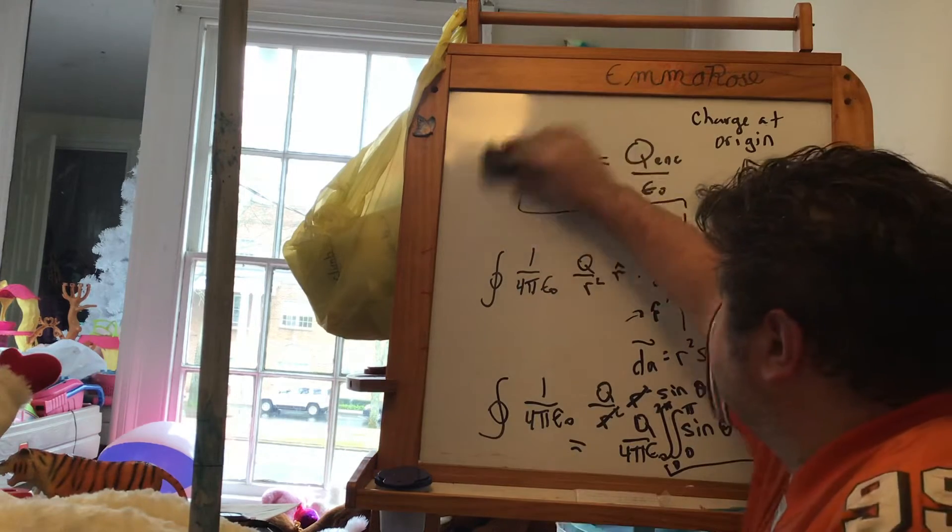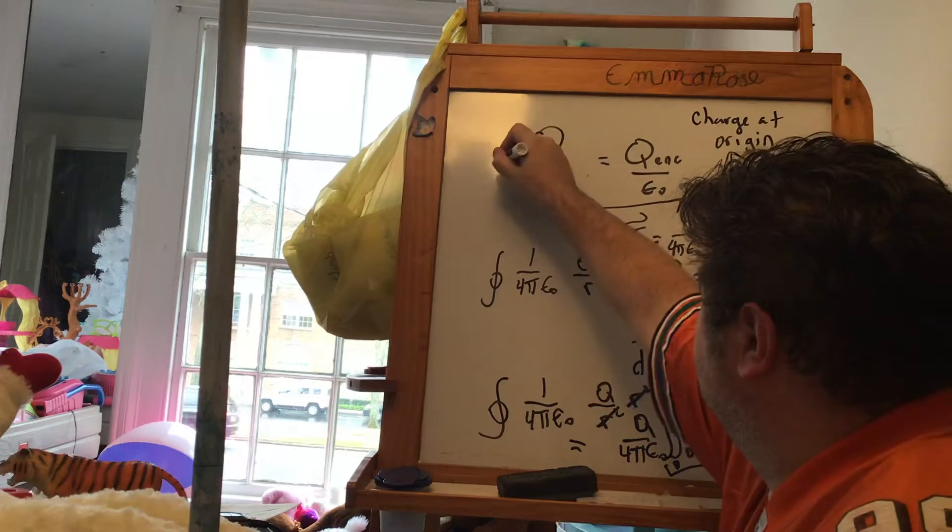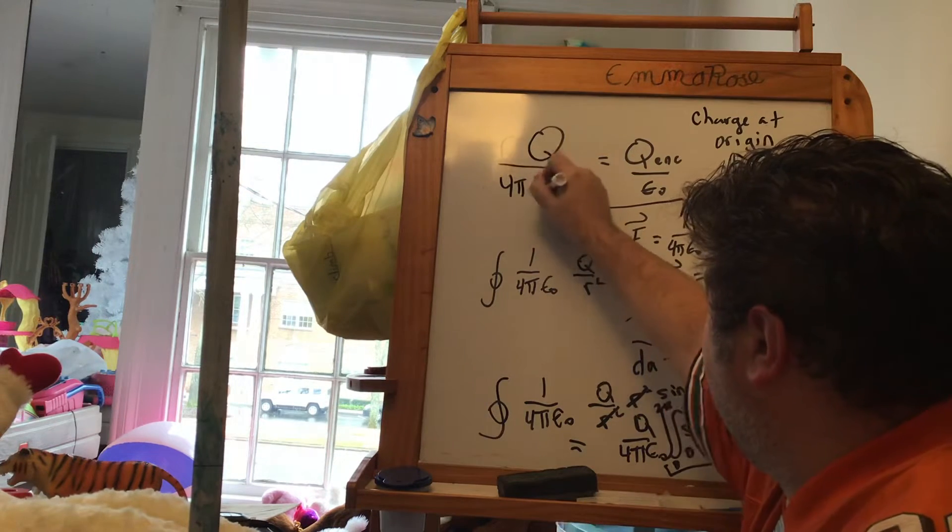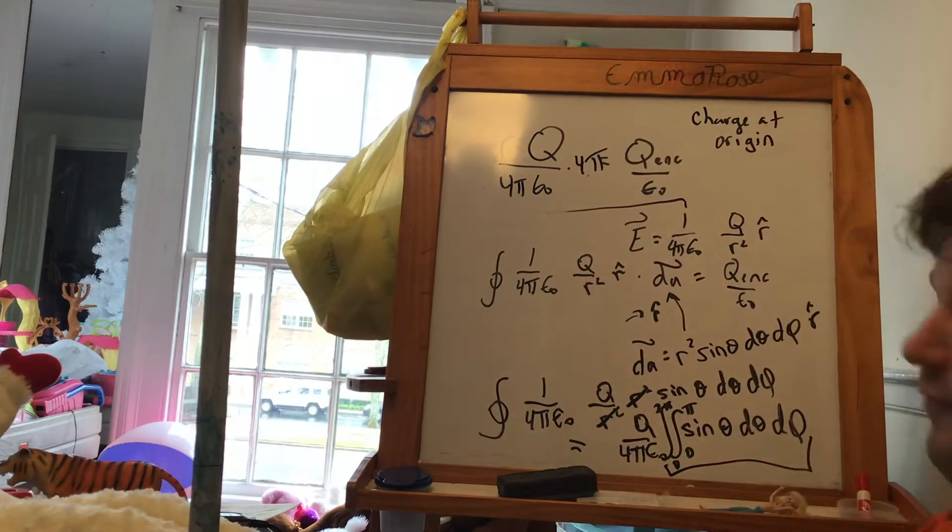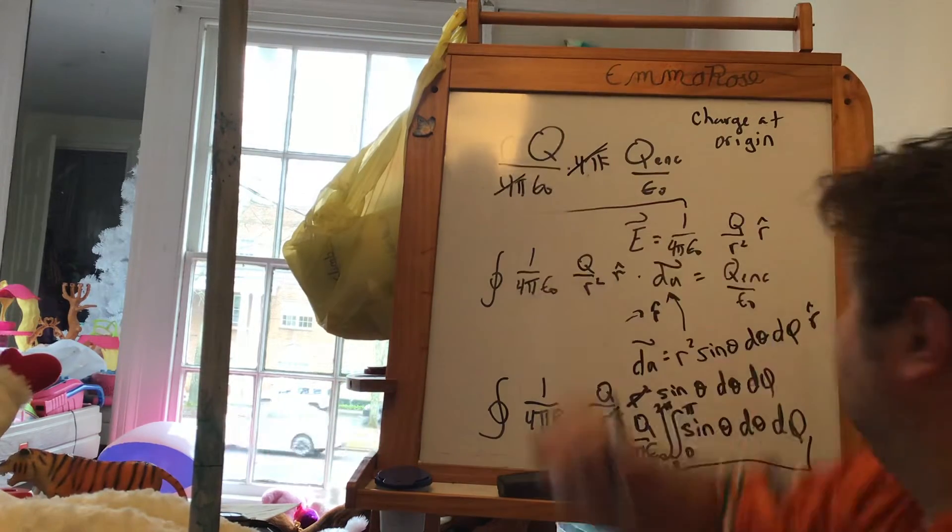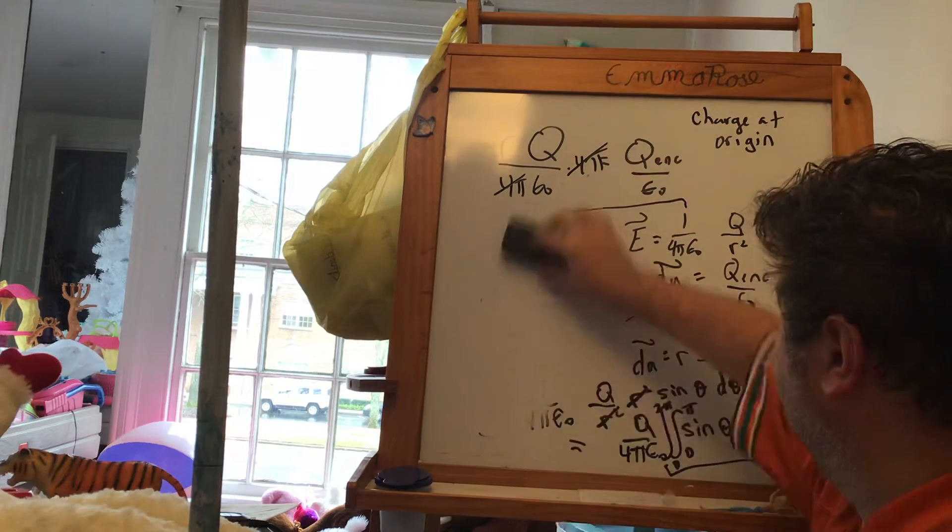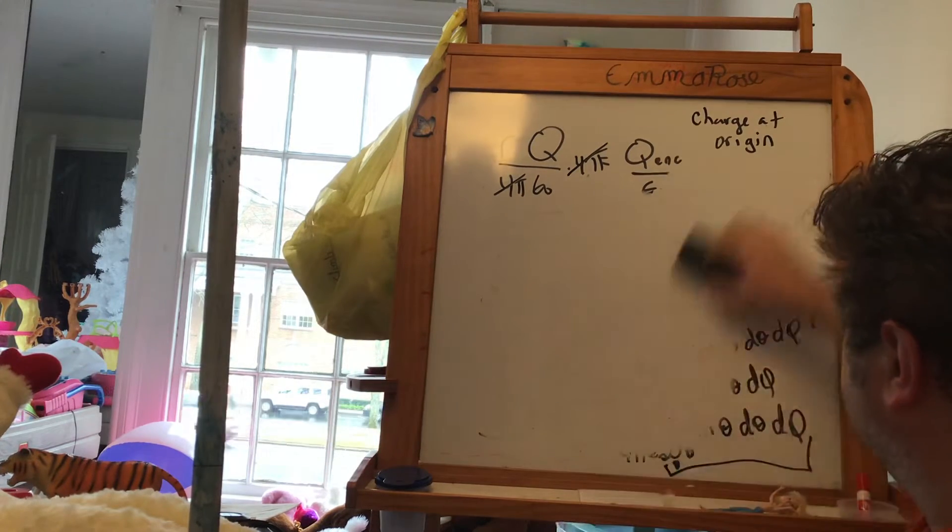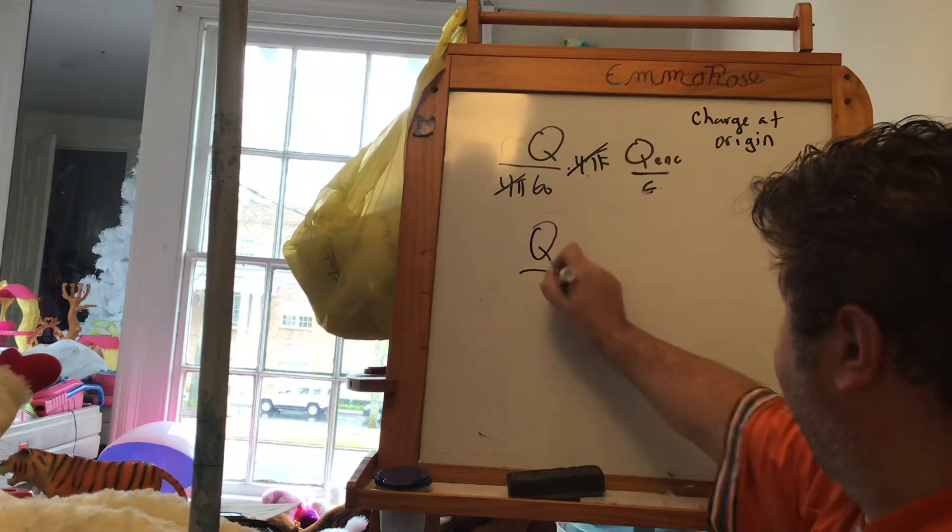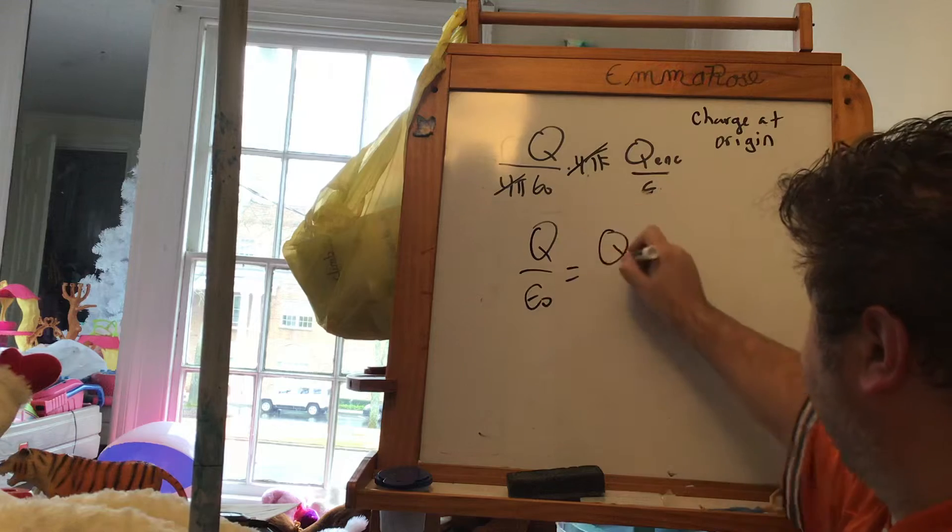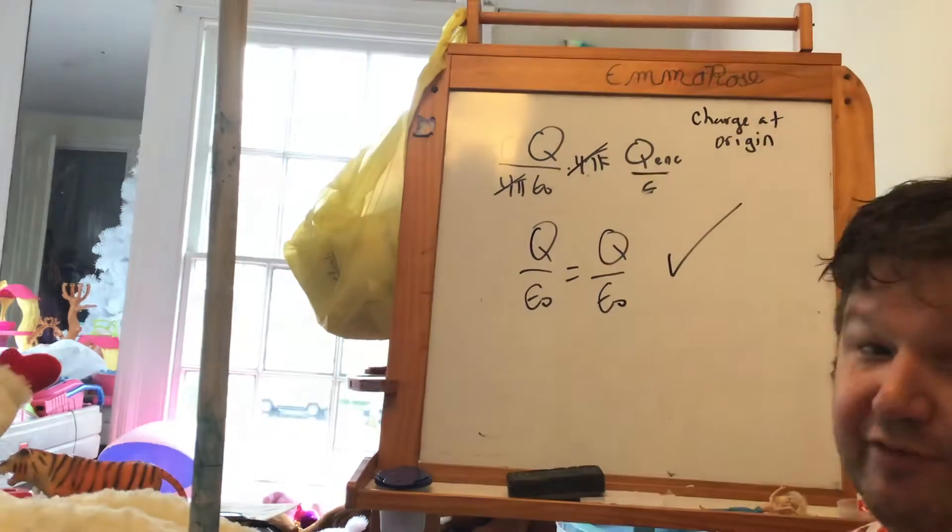So if I come over here, I get q over 4π epsilon nought times 4π. The 4π's cancel. And I'm left with the following wonderful expression: Q over epsilon nought equals q over epsilon nought. So it seems like I have a proof.